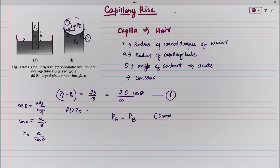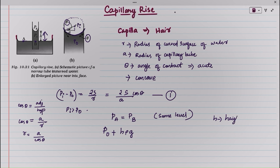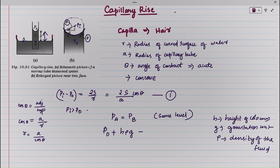Because they are at the same level, the pressure must be equal. From earlier classes, the pressure at A is P0 — the pressure inside the tube — plus H rho G, which is the pressure due to the liquid column. Here H is the height of the liquid column, G is the gravitational constant, and rho is the density of the fluid. This equals P_A, which is the outside pressure Pi.